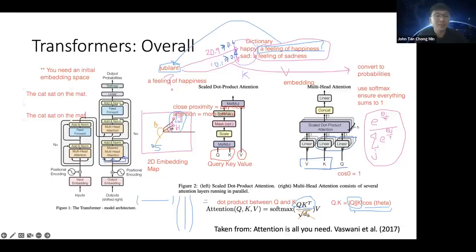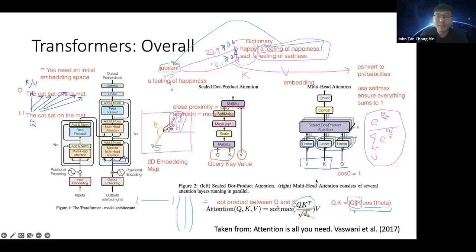For example, given the sentence 'the cat sat on the mat,' in self-attention you want to query each word against the entire sentence. The query comes from each word in the sentence, and the same sentence also provides the key and the value. The same word embedding is passed to both query, key, and value — just through different linear layers. This is called self-attention.